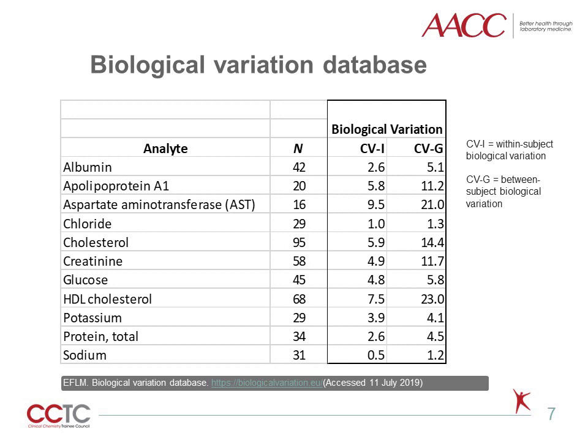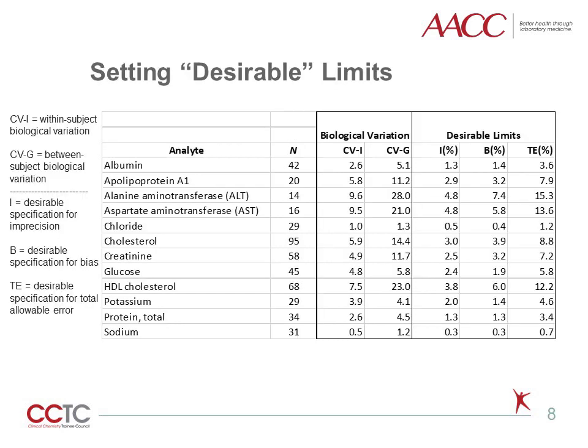The most recent biological variation estimates and database are provided online by the European Federation of Clinical Chemistry and Laboratory Medicine, or EFLM. The EFLM provides a meta-analysis of published papers on biological variation to obtain CVI and CVG estimates. The table in this slide was created for selected chemistry analytes using median values for CVI and CVG from the EFLM website, along with the number of publications used to generate the final estimates. These numbers will be used to set analytical quality goals, expanded to include desirable limits for imprecision (I), bias (B), and total error (TE), all expressed as percentage values.